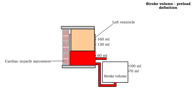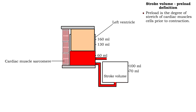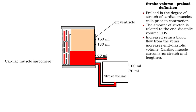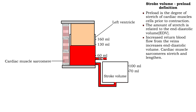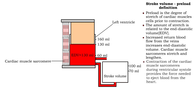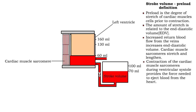Preload is the degree of stretch of cardiac muscle cells prior to contraction. The amount of stretch is related to the end diastolic volume. Increased return blood flow from the veins increases end diastolic volume. Cardiac muscle sarcomeres stretch and lengthen. Contraction of the cardiac muscle sarcomeres during ventricular systole provides the force to eject blood from the heart.